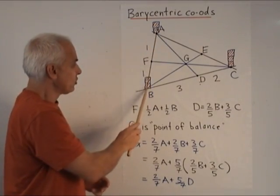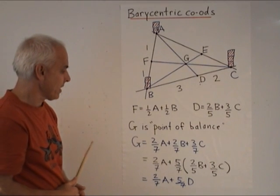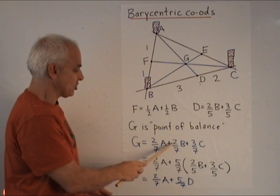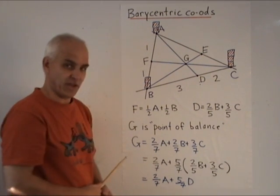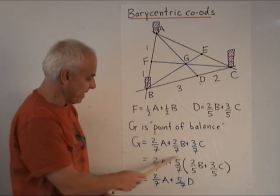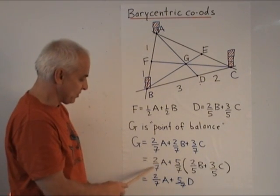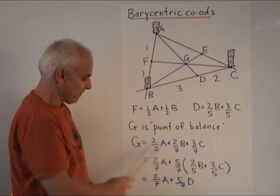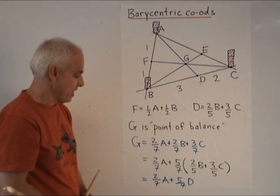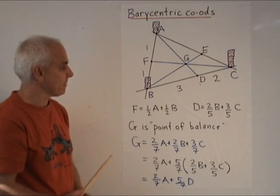So we have the three masses, two, two, and three, and the total mass of seven. So what we do is we write g equals two-sevenths of a plus two-sevenths of b plus three-sevenths of c. Now this is a lovely way of thinking, because arithmetically we can manipulate this to get a lot of interesting relations. For example, we can rewrite this as two-sevenths a plus, pull off the five-sevenths here, and then what's left is two-fifths b plus three-fifths c. So we're seeing that the point g is two-sevenths a plus five-sevenths d. What does that mean? It means that as far as the balance along here goes, we're thinking of having five masses total at d, and two masses there.